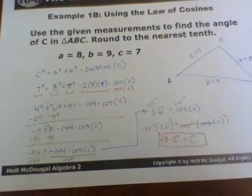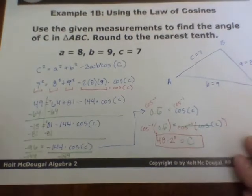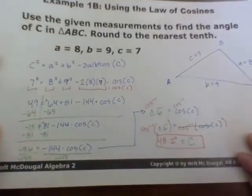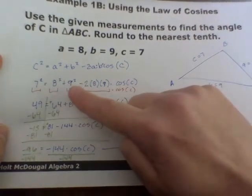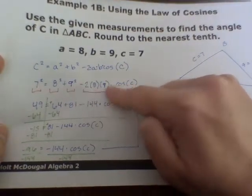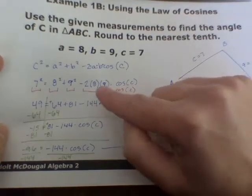So finding the angle measure is a little bit harder than finding a side length because you do have to end up using the inverse of cosine. But it does work out the same. So you'll always have to subtract this number, subtract that number, and divide by whatever you get as your product here.